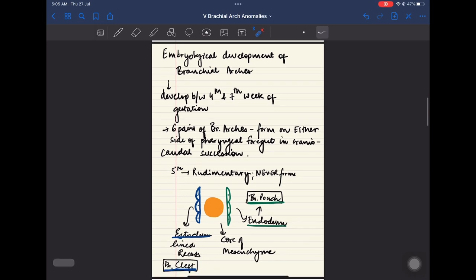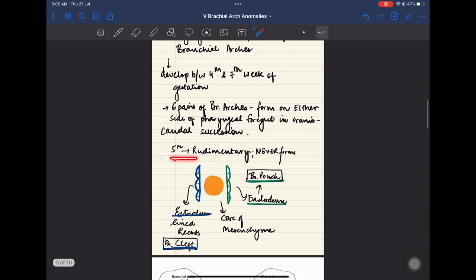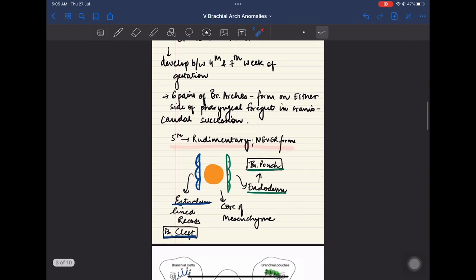Now coming on to the embryological development of branchial arches. They develop between the 4th and 7th week of gestation. There are 6 pairs of branchial arches which form on either side of pharyngeal foregut in craniocaudal succession. The 5th arch is rudimentary. It never forms.